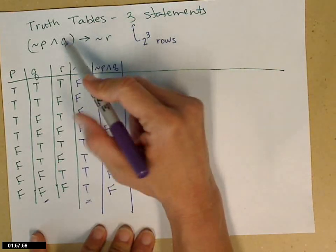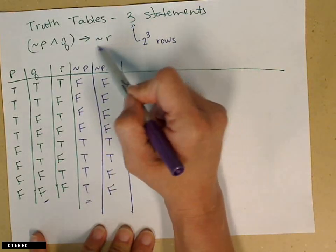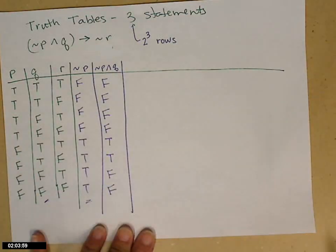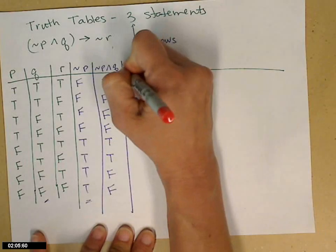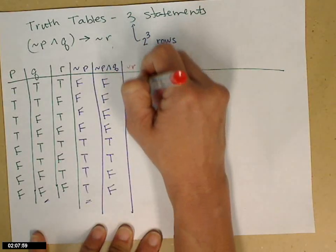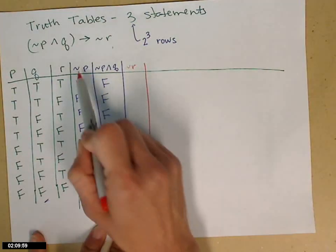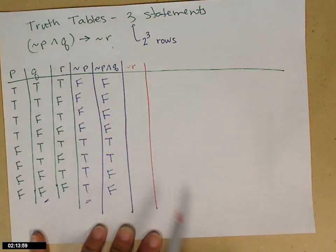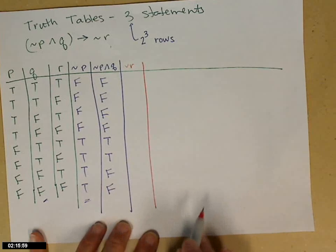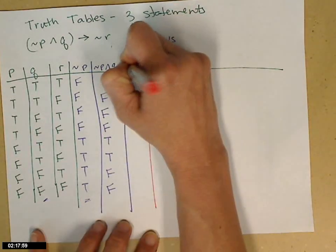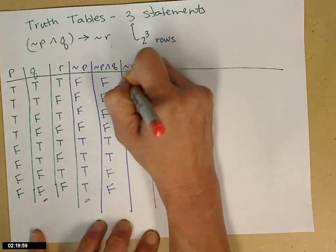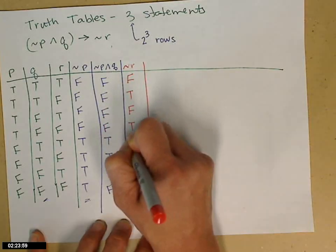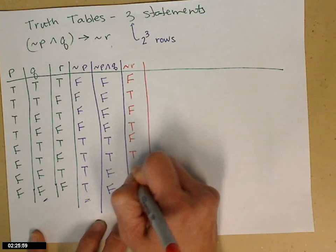Now I need to go: if this, then not R — which means I need a not R column. Let's go ahead and put in our not R. I need to go to the R column and change all of the truth values. R was just alternating, so I'll just do that again but start with false: false, true, false, true, false, true, false, true. If you're not good at staying in the lines, use lined paper.